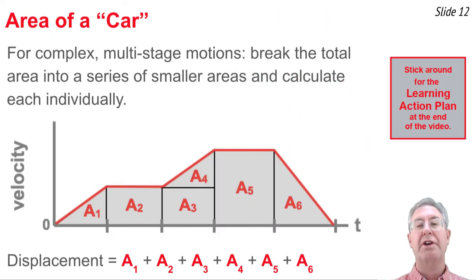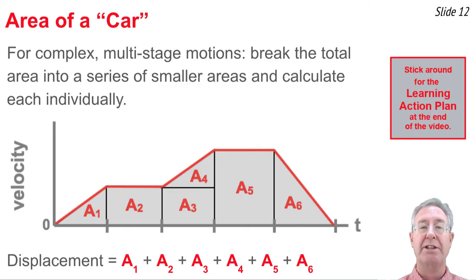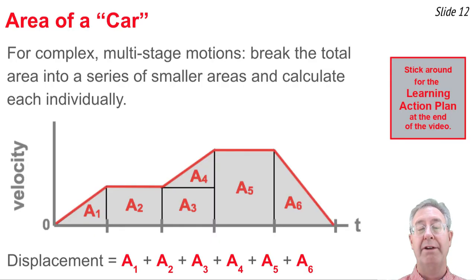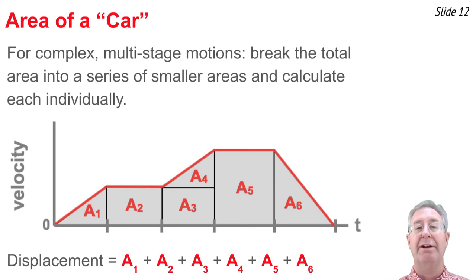What about calculating the area of an odd-shaped graph from a multi-stage motion? For example: acceleration from rest, then constant speed, then acceleration to a higher speed, then constant speed, then deceleration to zero. To find displacement, break the entire area up into smaller rectangles, triangles, and trapezoids, calculate the area of each, and add them all together. The key is finding a way to divide the complex shape into computable areas.